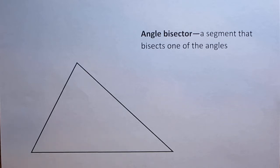To do that we can use a compass, or in this case I'm just going to use a protractor. What I want to do is measure each of the angles, divide it in half, and then use that measurement to draw in the angle bisector.